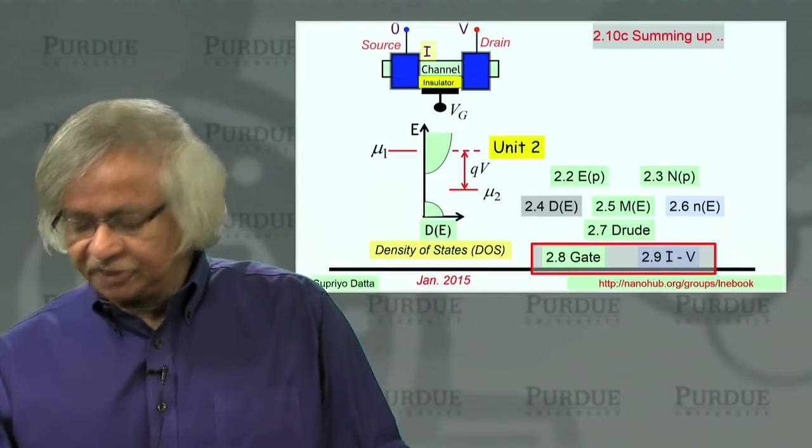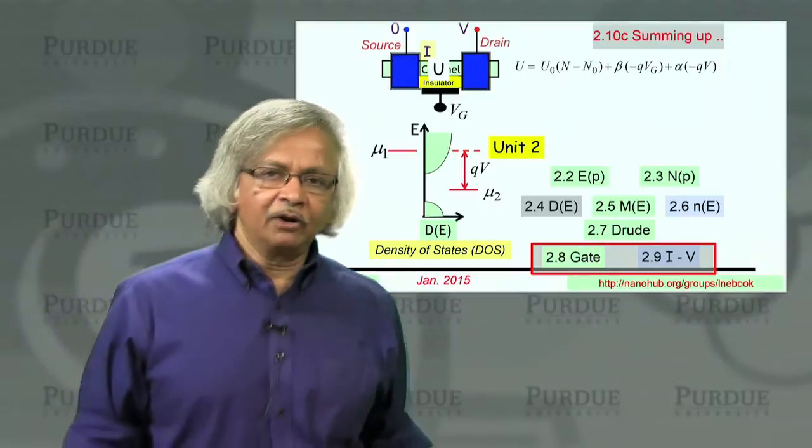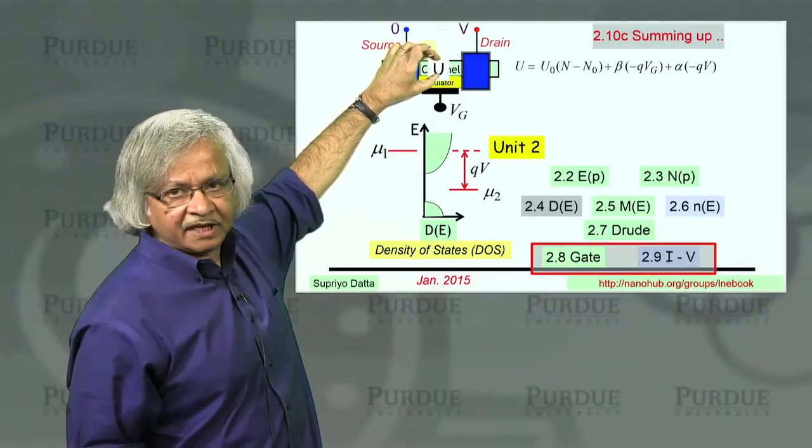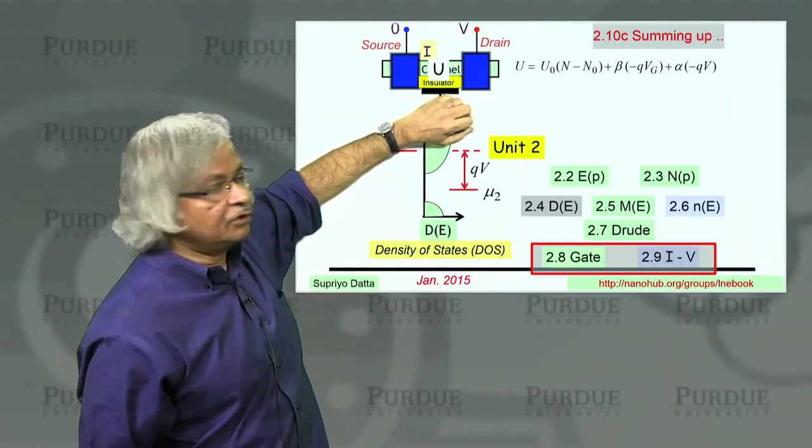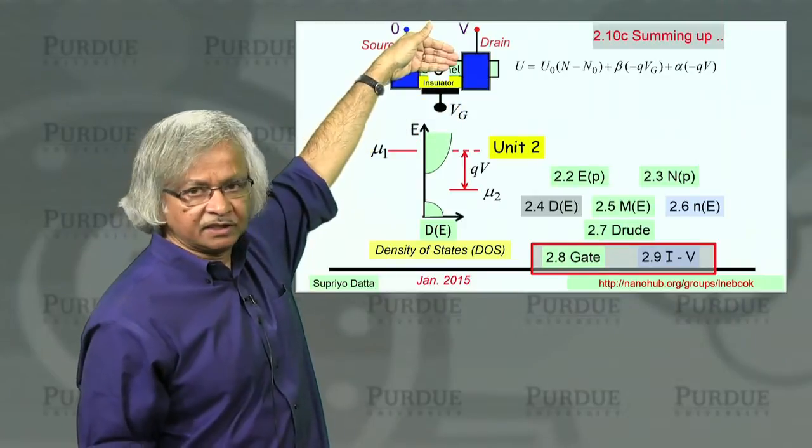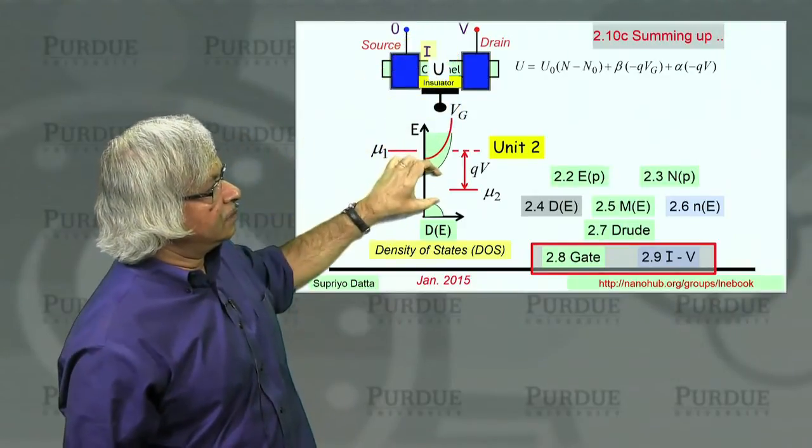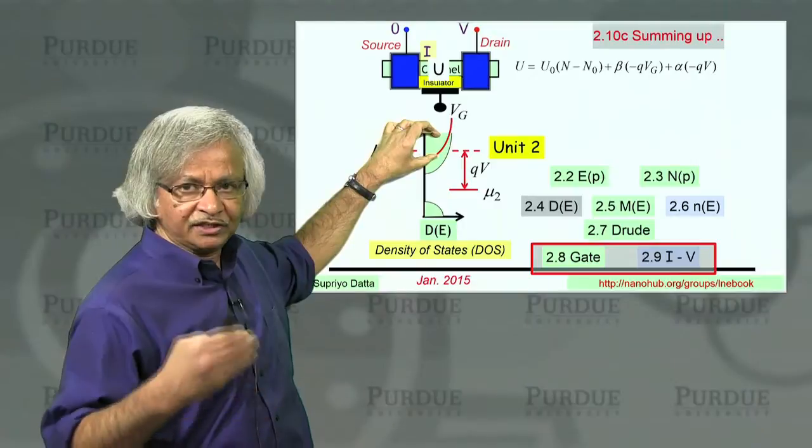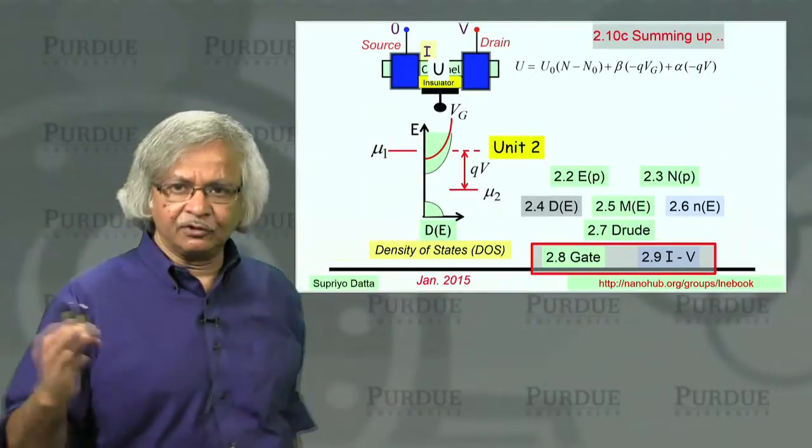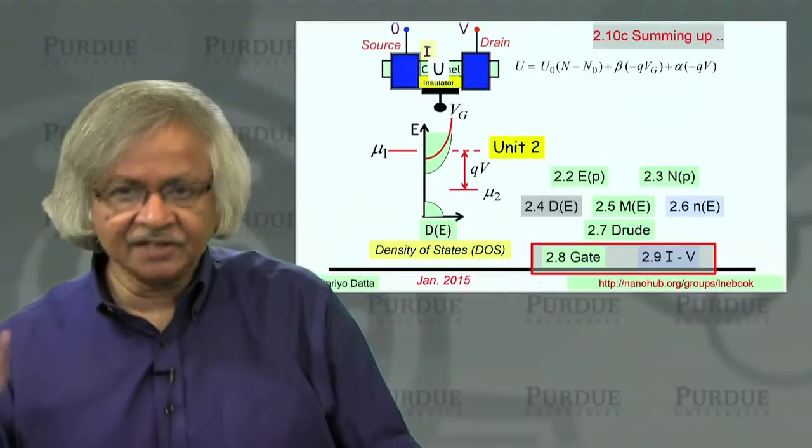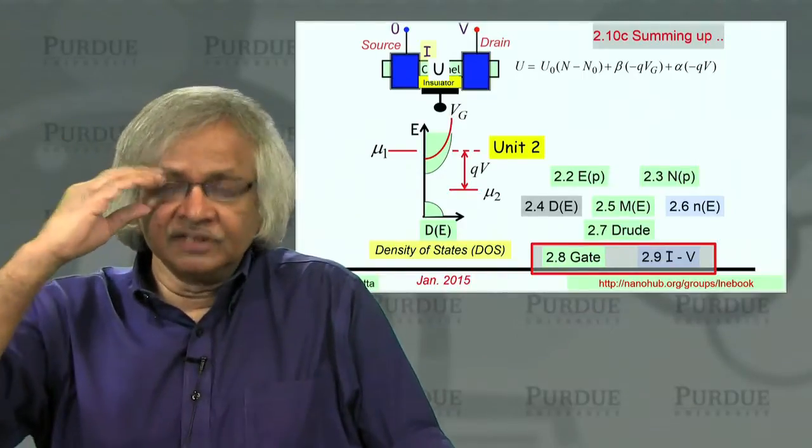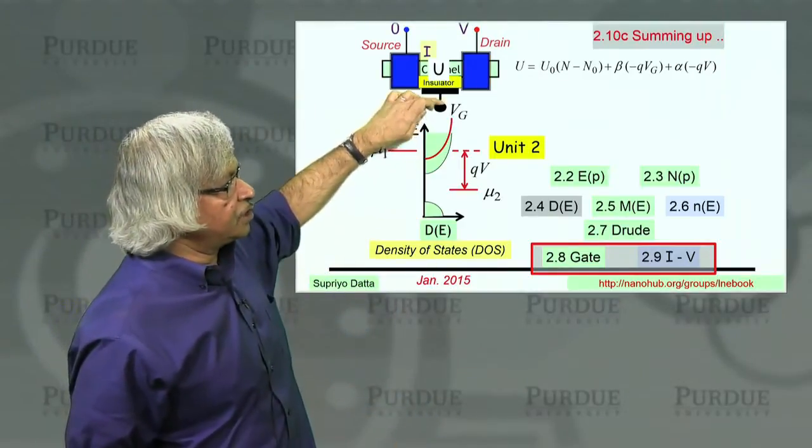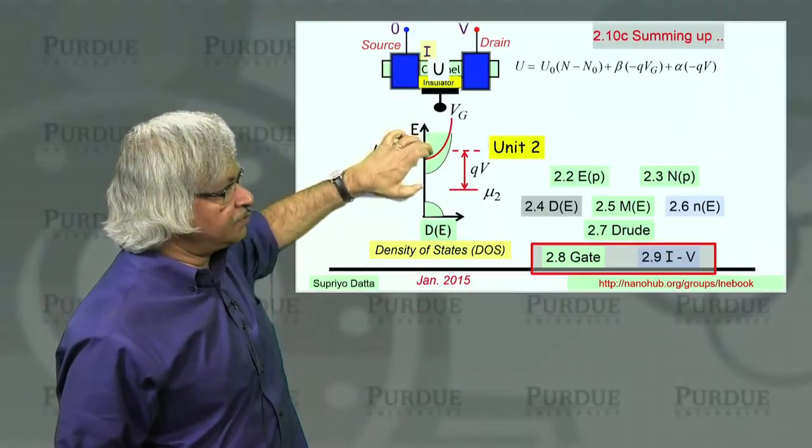And once you introduce that, it also leads you naturally to this important part of the story, which is the potential energy inside the channel. This gate voltage can be used to control this potential energy in the channel so that a band can be moved up if the potential energy is positive, which means if the gate voltage is negative, or it could be moved down. And that, of course, is the essence of transistor action. Transistor means a resistor whose resistance can be changed with that third terminal.